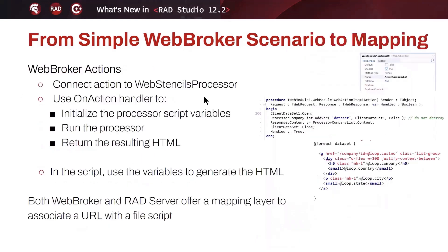For example, you can write a for-each loop over a registered dataset and access fields like company, country, city, and state. You can also define module variables available across all scripts in a web module. Here's a WebBroker application example: an action associates a path like '/list' with code that opens a dataset, registers it by name, and then processes the file using the Web Stencils processor component.